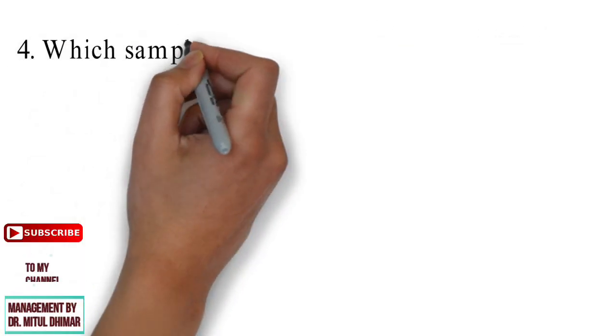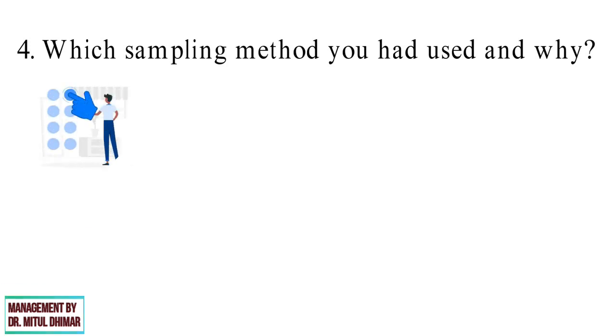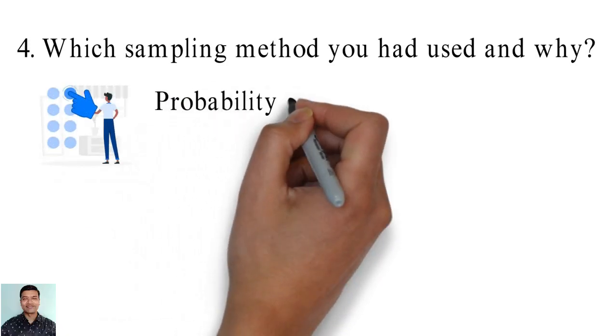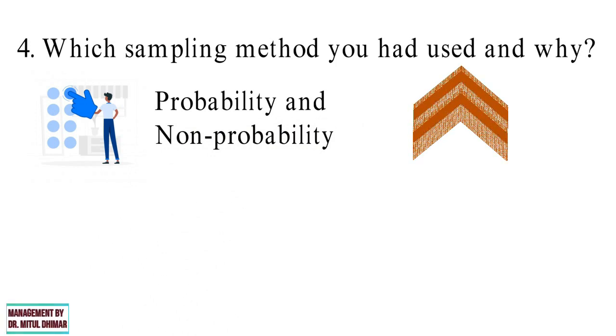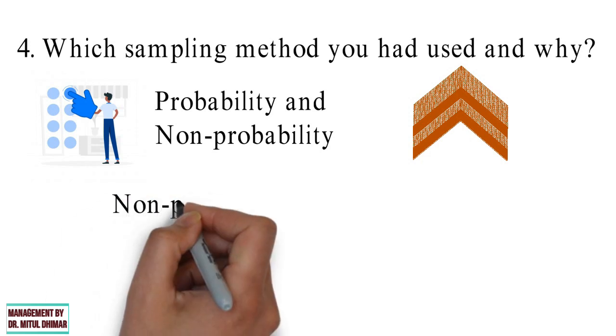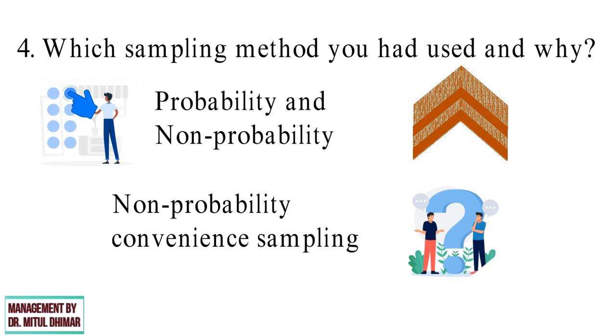Question number 4: Which sampling method you had used and why? There are two types of sampling methods, probability and non-probability sampling method. You can refer my video on types of sampling method through clicking link above. As well as I will give link in description also. Mostly researchers used non-probability convenience sampling to select respondent because this is one of the simplest sampling method. You need to give answer as per sampling method used by you with reason.